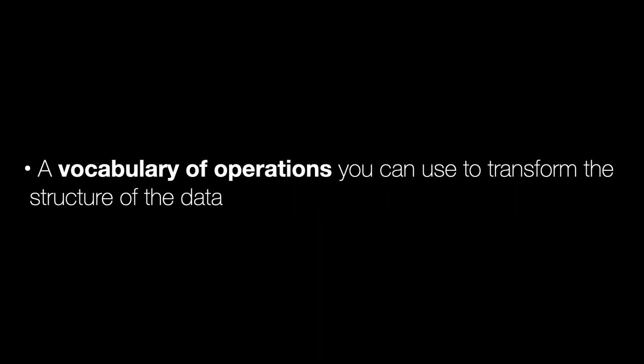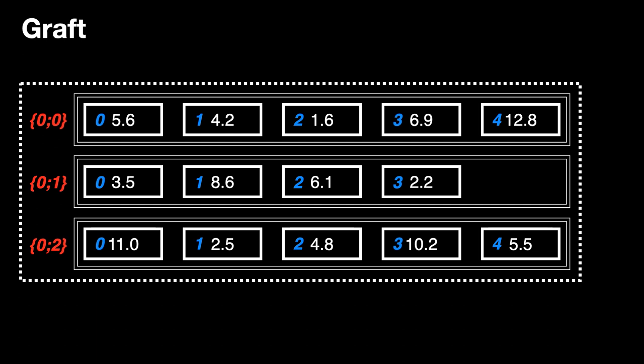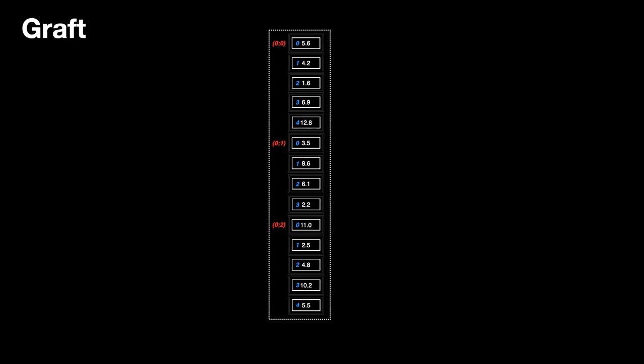So I also mentioned that data trees have a vocabulary of operations that you can use to transform the structure of the data. Let's take a look at a few of these. The most important operation is graft. Graft does the same thing that a one-to-many component does automatically. It puts every item on its own list. Every item is moved onto its own list and what was previously its item index gets appended to the branch path. Now each item is at index 0 in its own new list.